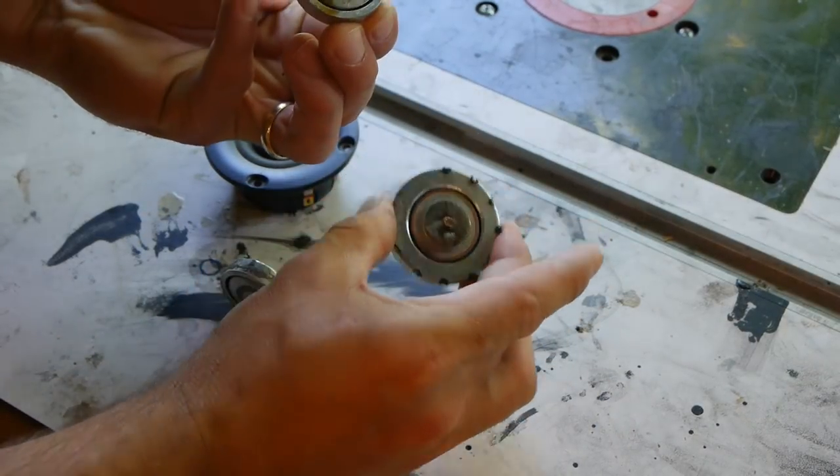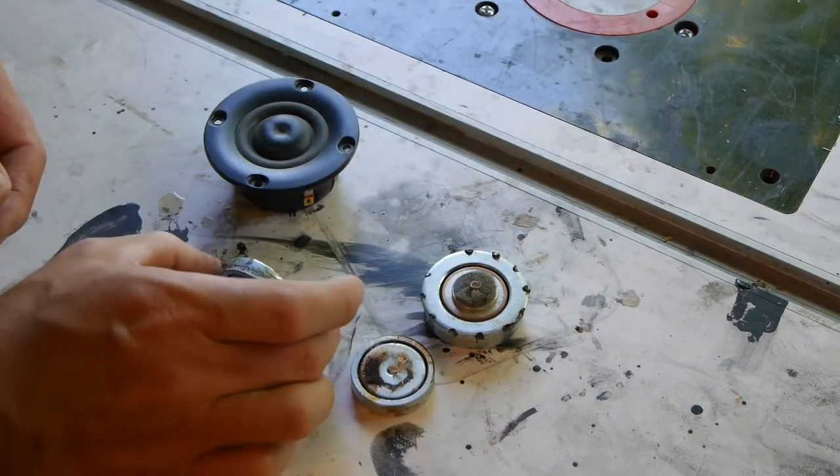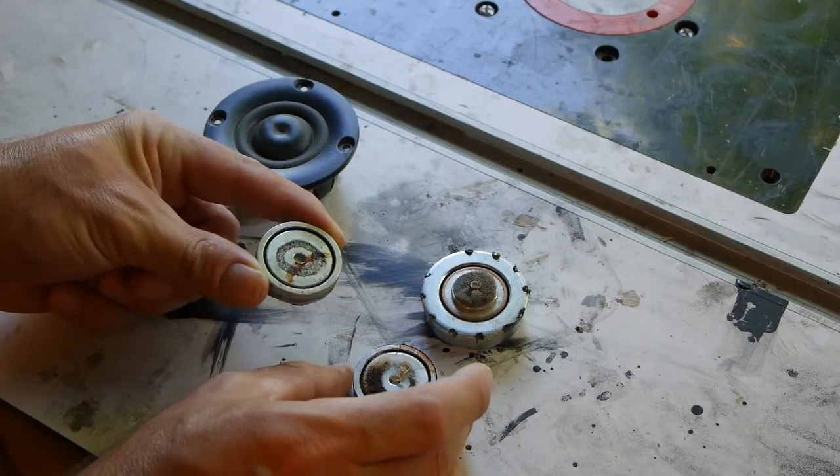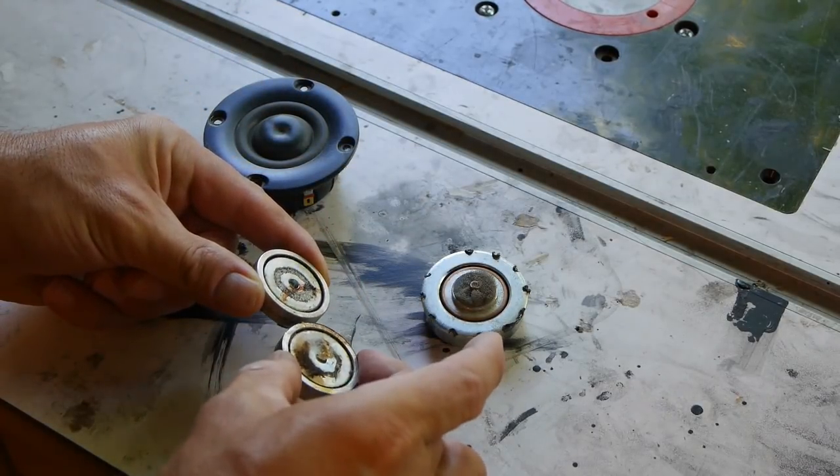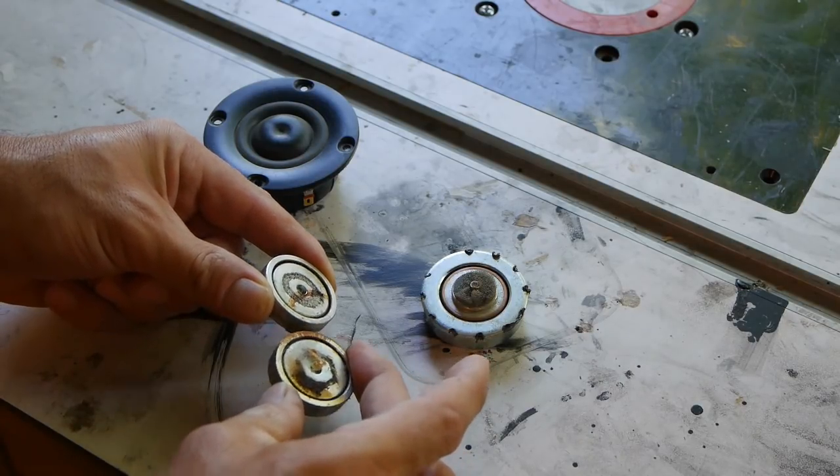This is from a Tang Band tweeter and a Dayton neo tweeter. You can see the magnets are quite a bit smaller. The Tang Band has ferrofluid in it and I'm trying to get the magnetism to react to the ferrofluid.